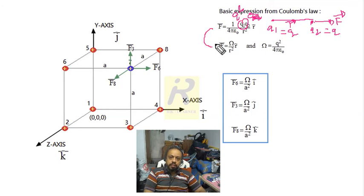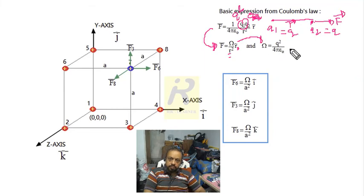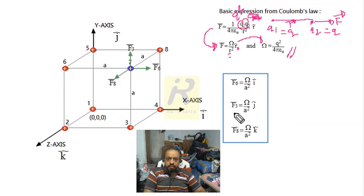Writing this expression repeatedly is tedious, so I define: F = ω/r² · r̂, where ω = q²/4πε₀. This shorthand convention will be used throughout. Now I find F₆, F₃, and F₈.